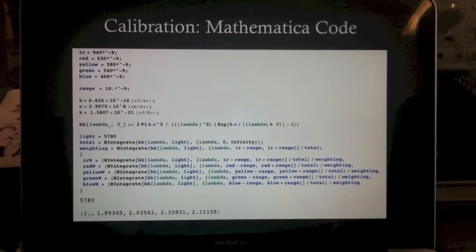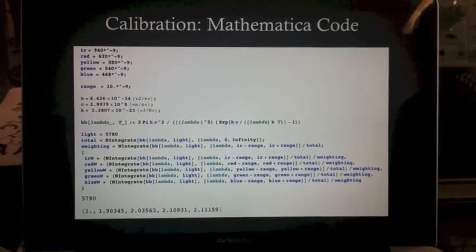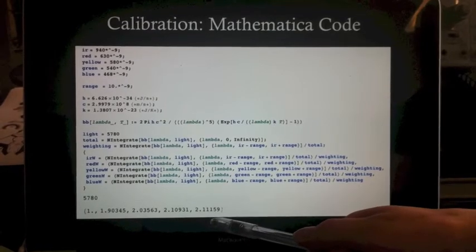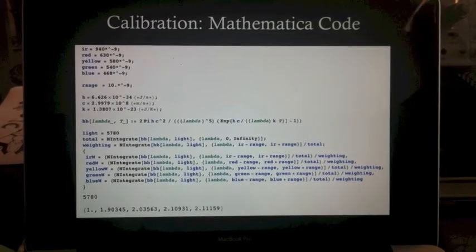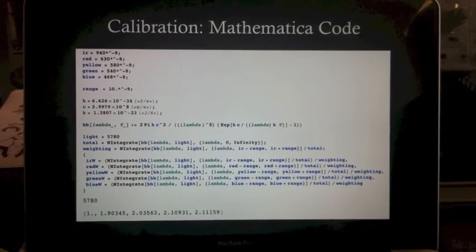It divides by the entire spectrum and then relativizes it off of the infrared. That's why infrared is returning a one. The Sun black body should be giving us about twice as much blue as infrared. We'll use those coefficients later in our Arduino code to scale the data.